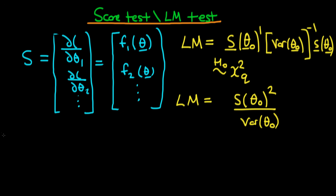Now we can talk about the intuition behind this particular test. Under the maximum likelihood estimates of the parameters, the score vector — which in this case is just a scalar — is going to be equal to zero. This is because we have maximized log-likelihood with respect to that parameter, so the gradient of log-likelihood with respect to that parameter, evaluated at the maximum likelihood estimates, is defined to be zero.